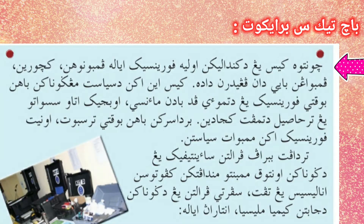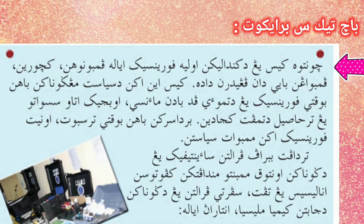Contoh kes yang dikendalikan oleh forensik ialah pembunuhan, kecurian, pembuangan bayi, dan pengedaran dadah. Kes ini akan disiasat menggunakan bahan bukti forensik yang ditemui pada badan manusia, objek, atau sesuatu yang terhasil di tempat kejadian. Berdasarkan bahan bukti tersebut, unit forensik akan membuat siasatan.